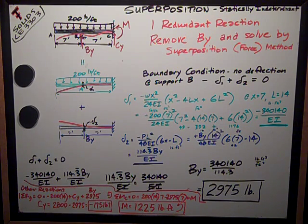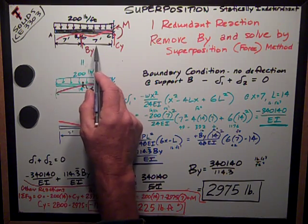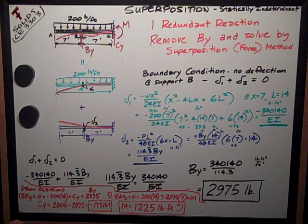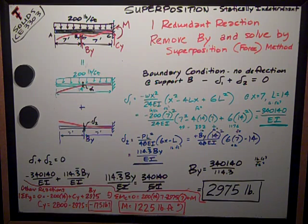As I say, I always like to use some sort of common sense check. What I've got is 200 pounds over 14 feet. That's 2,800 pounds. I know that with this situation, most of my load is going to go to that intermediate support B. So I've got 2,800 pounds. It's conceivable to me that I could have a reaction of 2975. If I got a reaction of 40 pounds, I would think something's wrong. So I always recommend a common sense check. That passes.